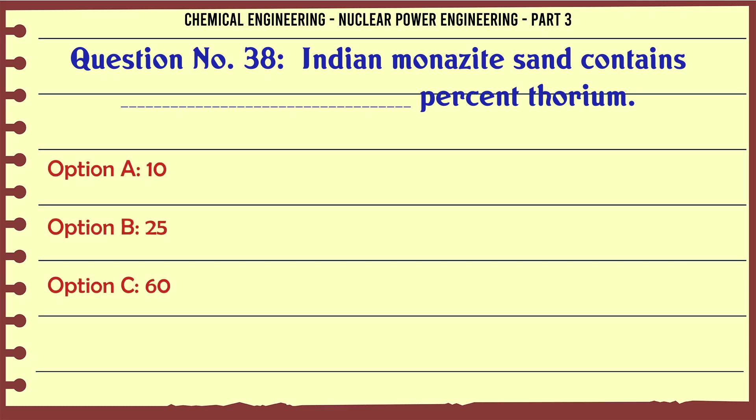Indian monazite sand contains 10% thorium. The correct answer is 10.